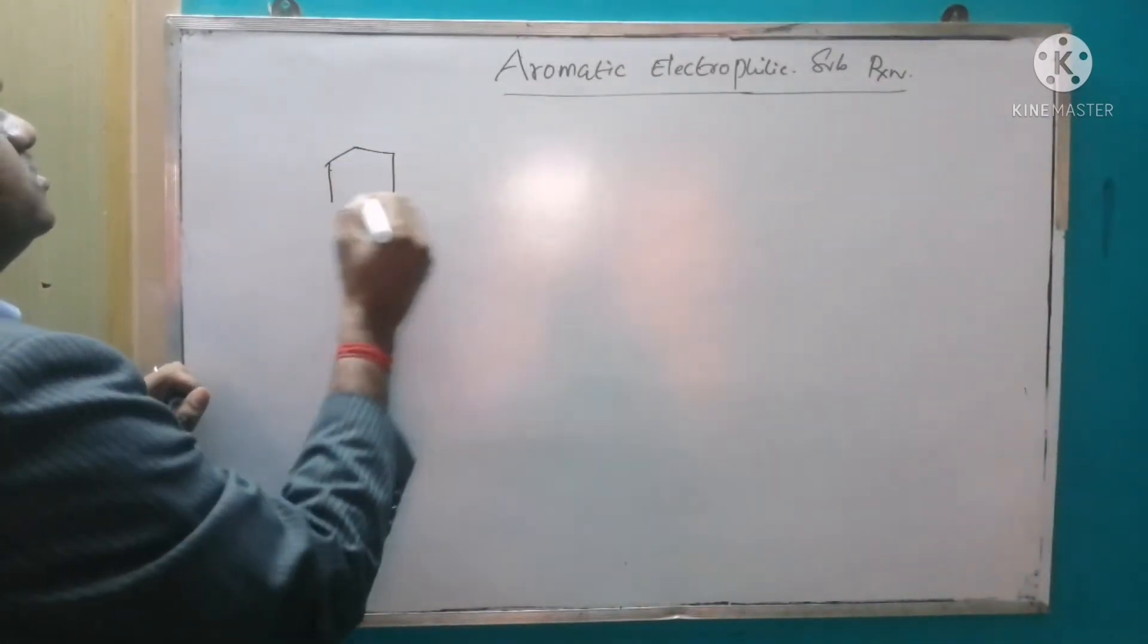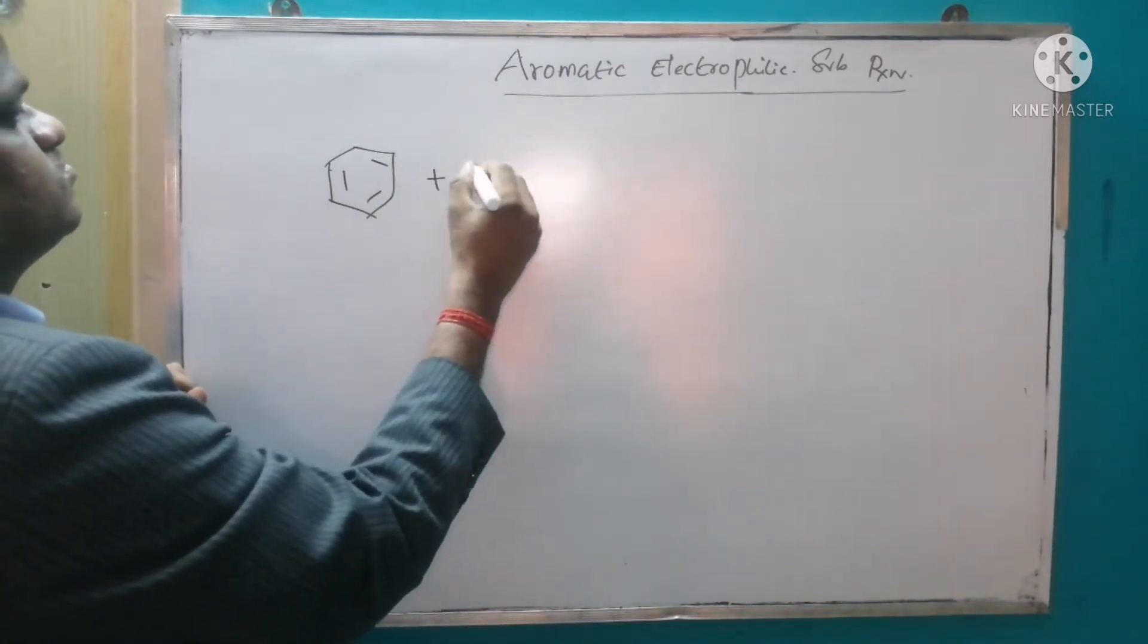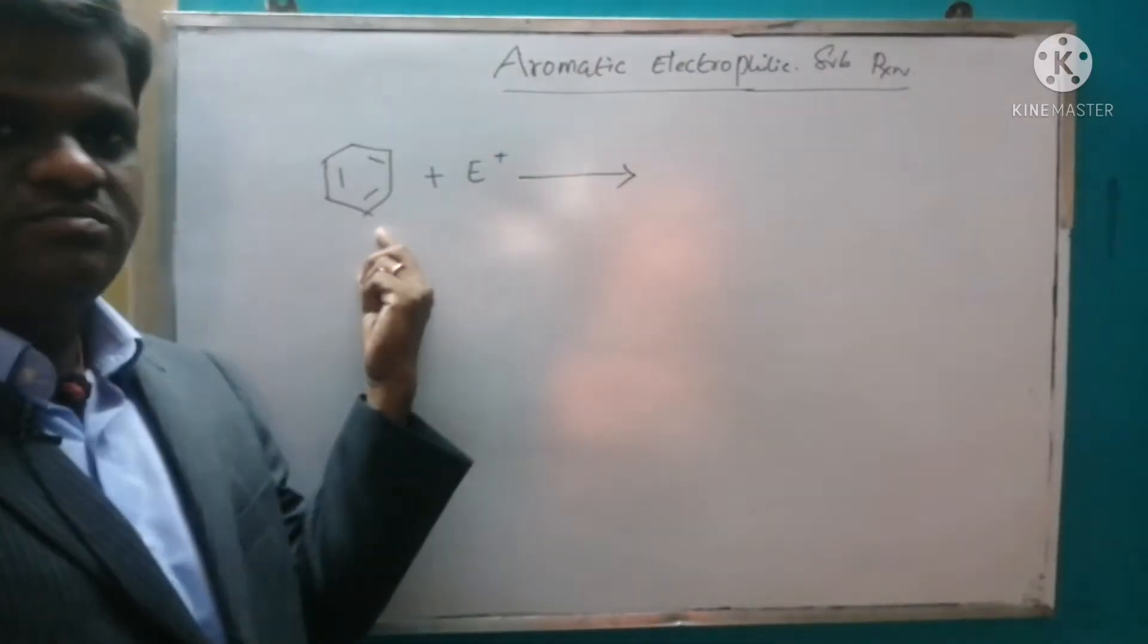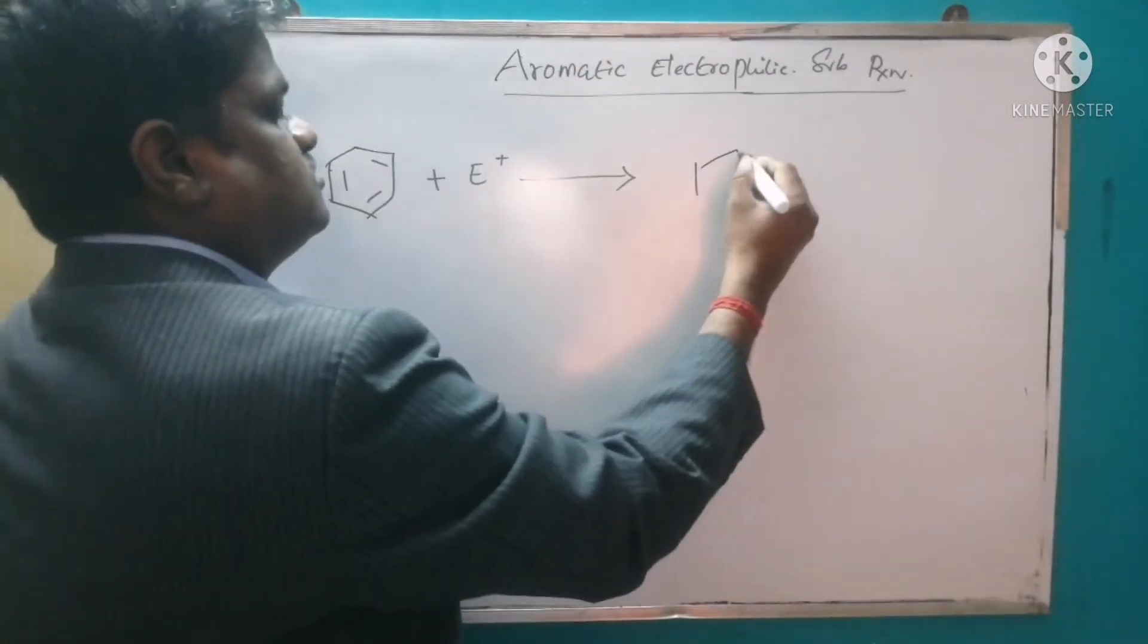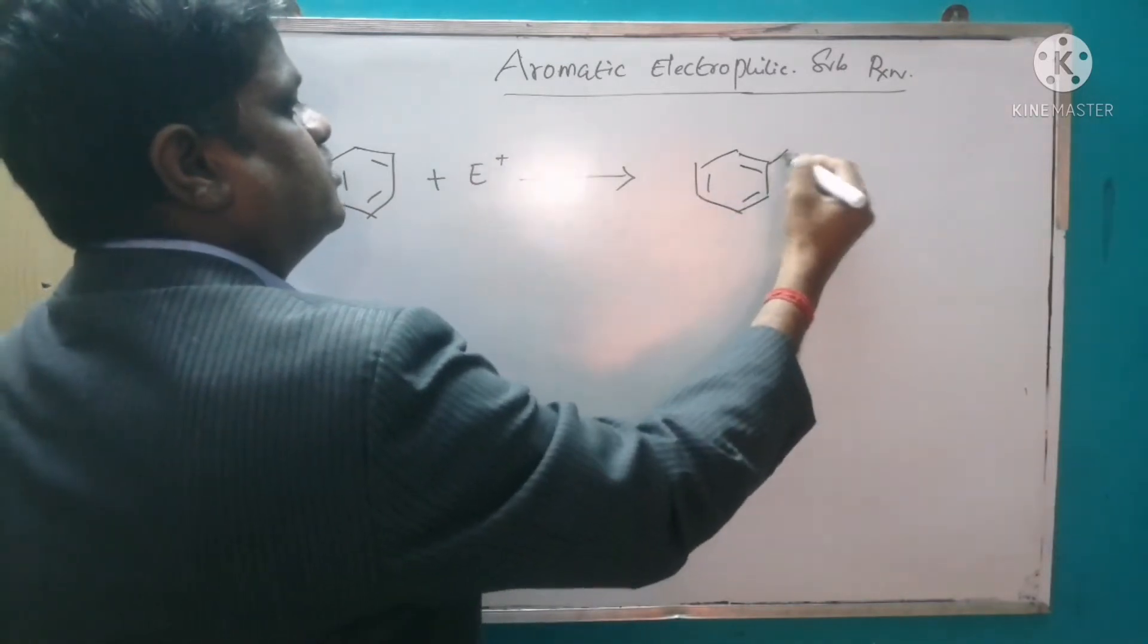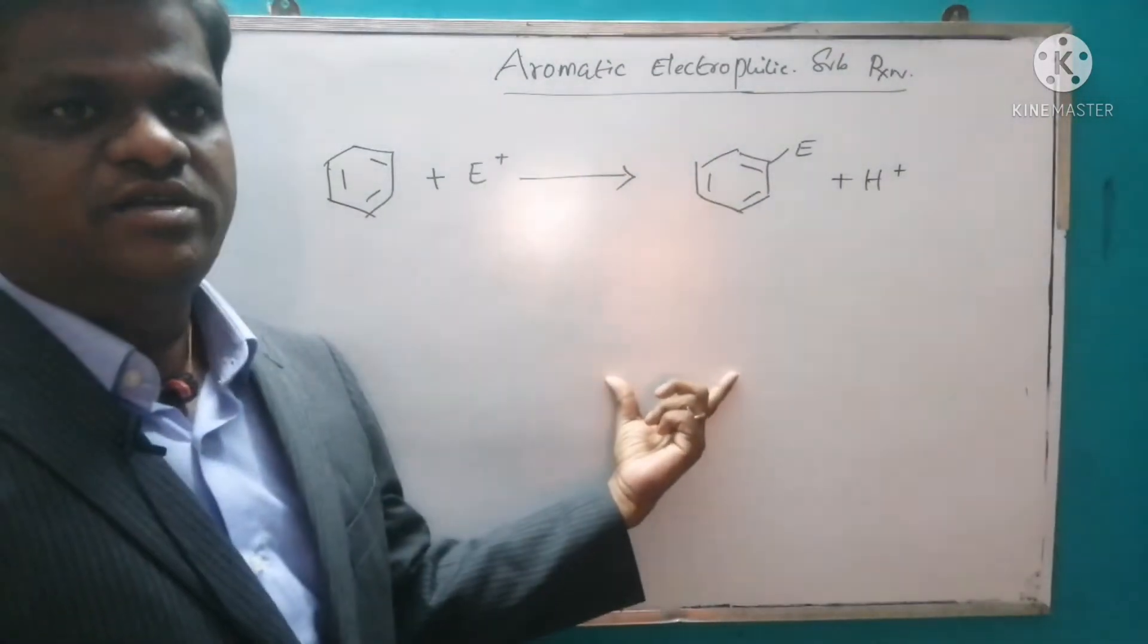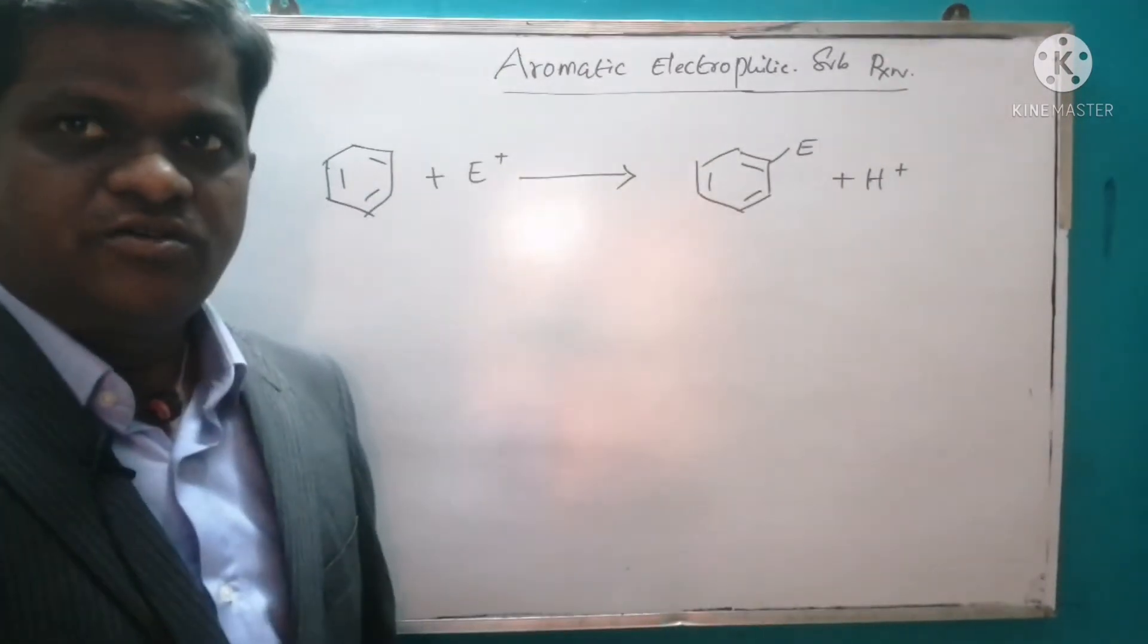First we are going to see the general reaction. So this is an aromatic system and this is an electrophile. And when this aromatic compound and electrophile react, the electrophile is going to be substituted. So this reaction is called aromatic electrophilic substitution.